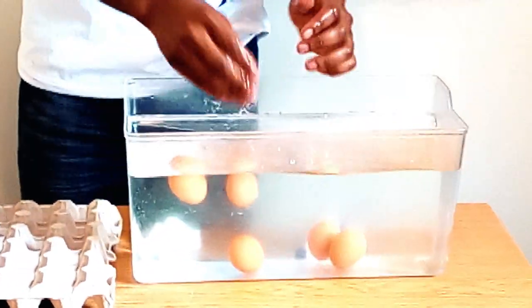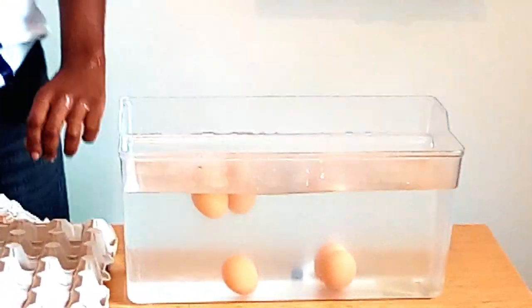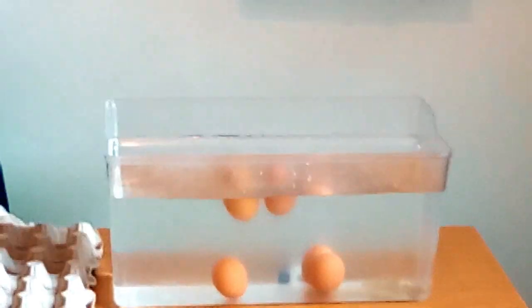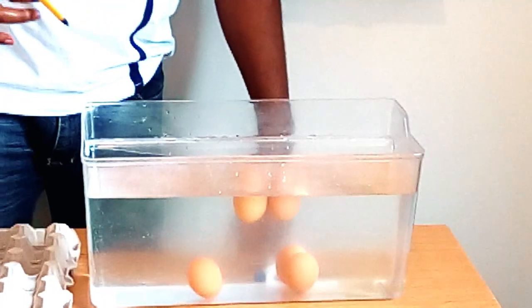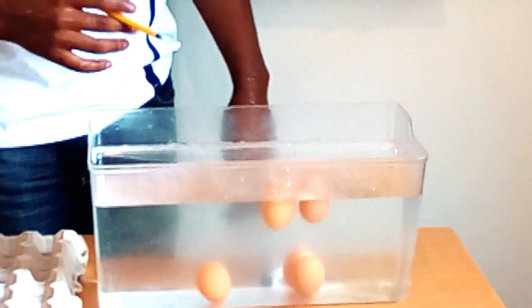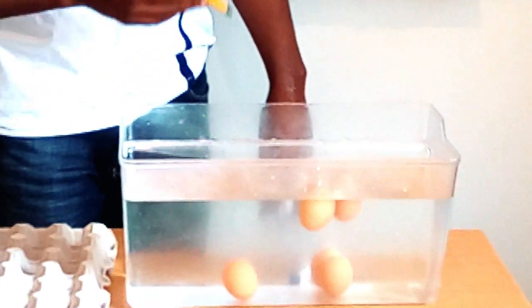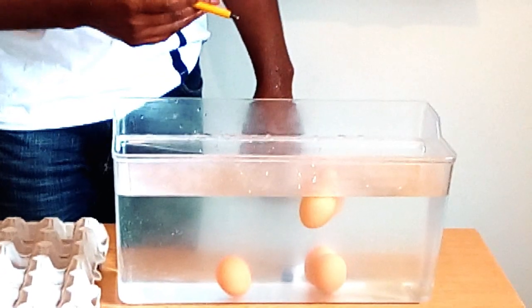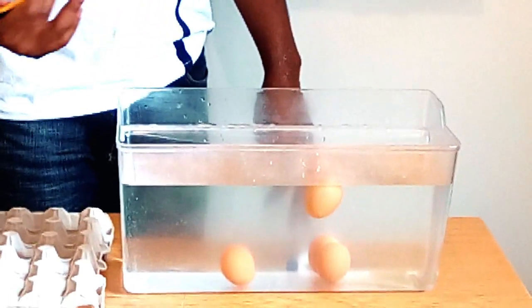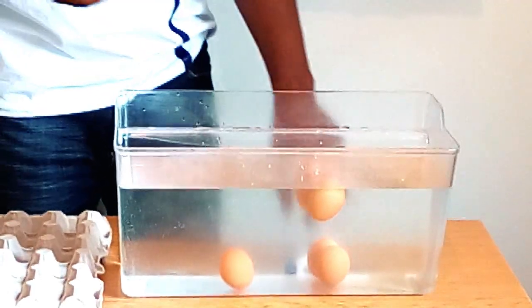There we go! So realize that three of my eggs are touching the bottom of my tank, and then two of them are on the surface of the water, so they're kind of floating.